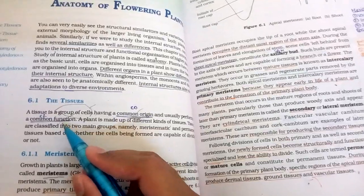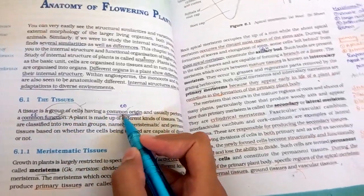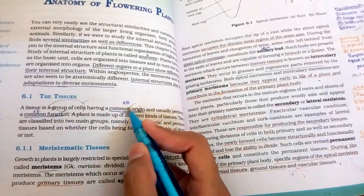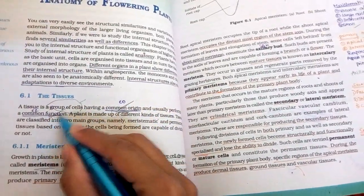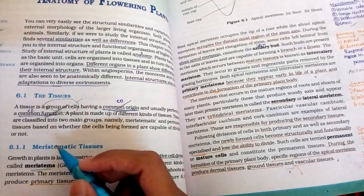What are tissues? Tissue is a group of cells having a common origin and usually perform a common function. You will remember that origin is common and function is also common. We call this group of cells.